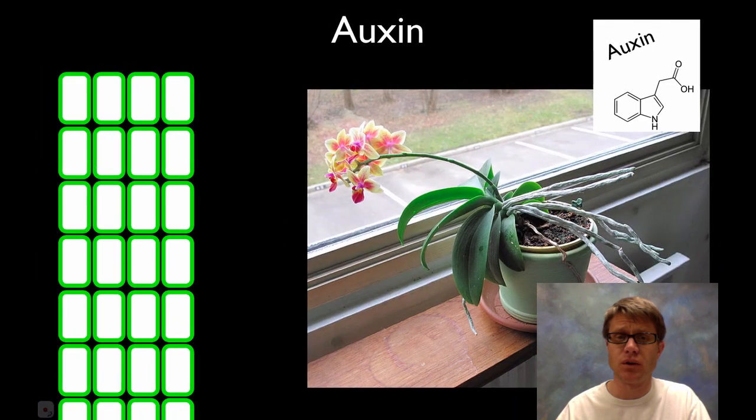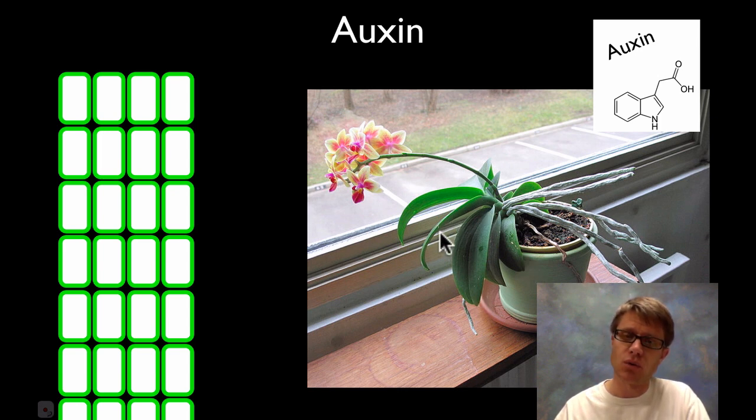So let's start with auxin. It's really one of the first ones that was ever studied. If you put a plant next to the window and just let it sit there for a long time, what you'll find is that plant is going to start to orient itself towards the sun. You can see all of these leaves are pointing towards the sun, and they're also going to move throughout the day.